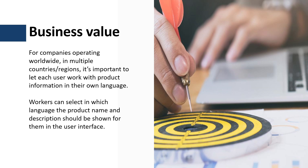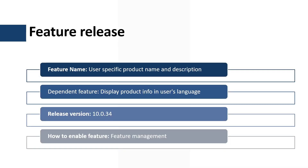This feature allows users to select in which language the product name and description should be shown, independently from the user interface language. Before this feature, the product name was displayed as per the user preferred language specified in the user settings form. However, using this feature I can keep the user interface in English and display the product name in my native language, which is Arabic.